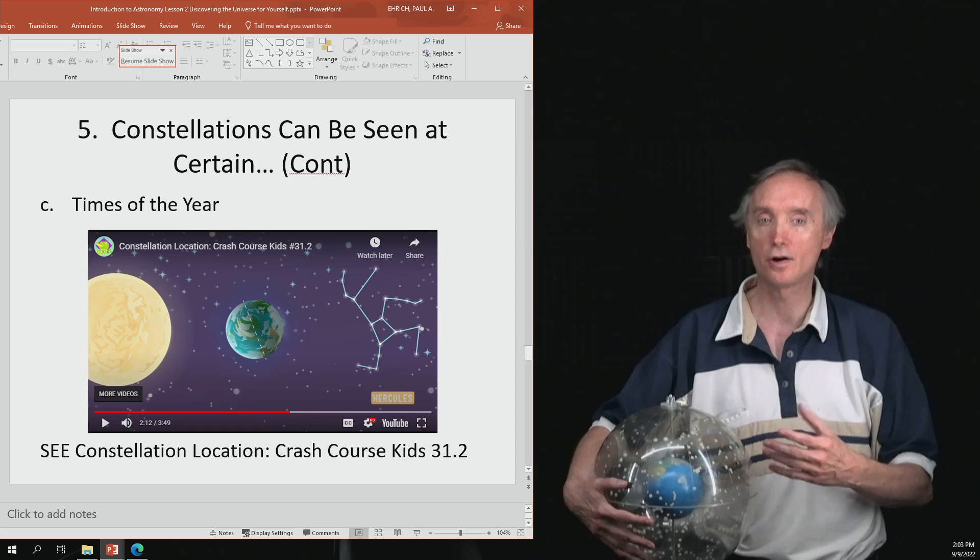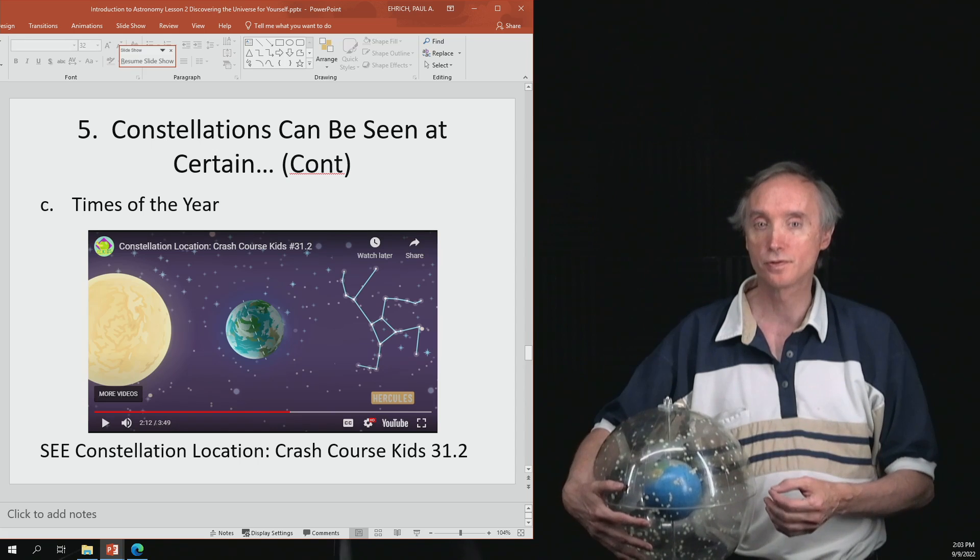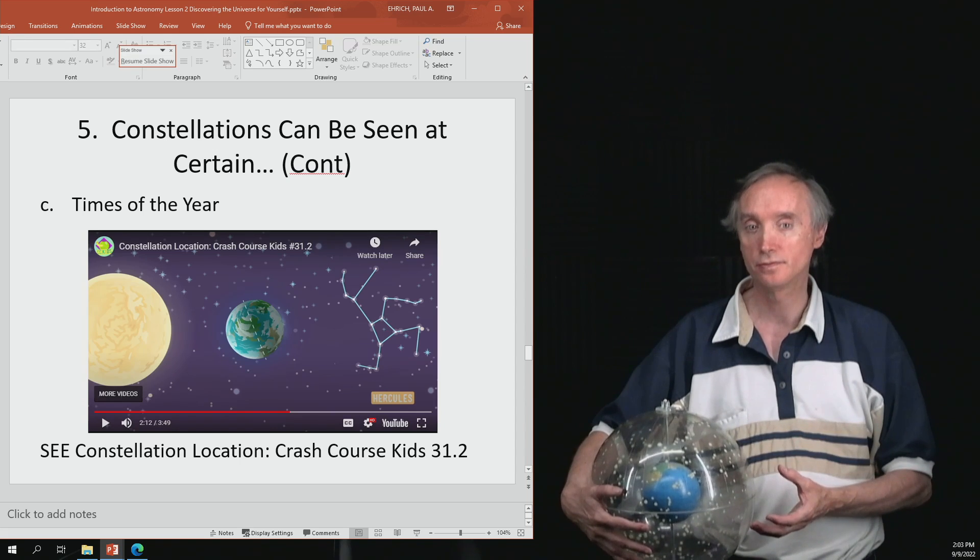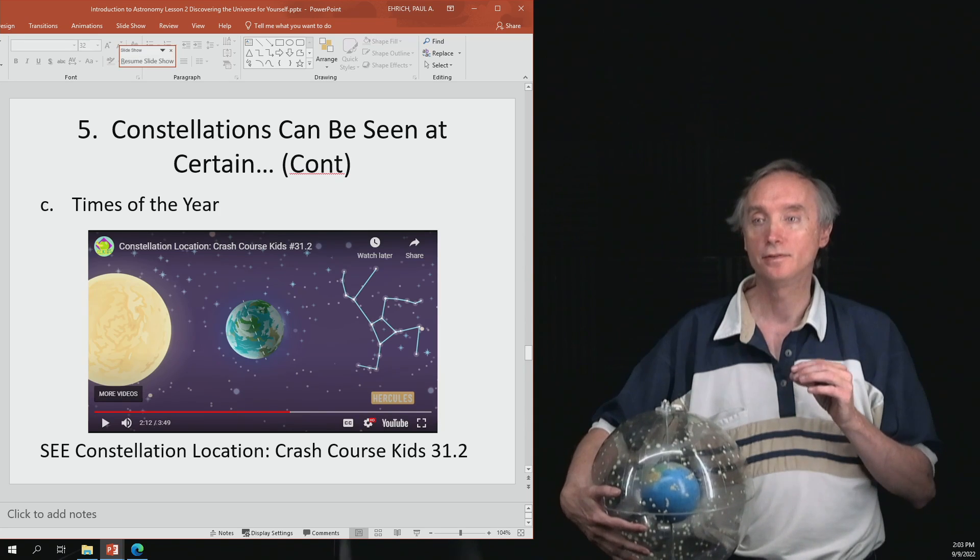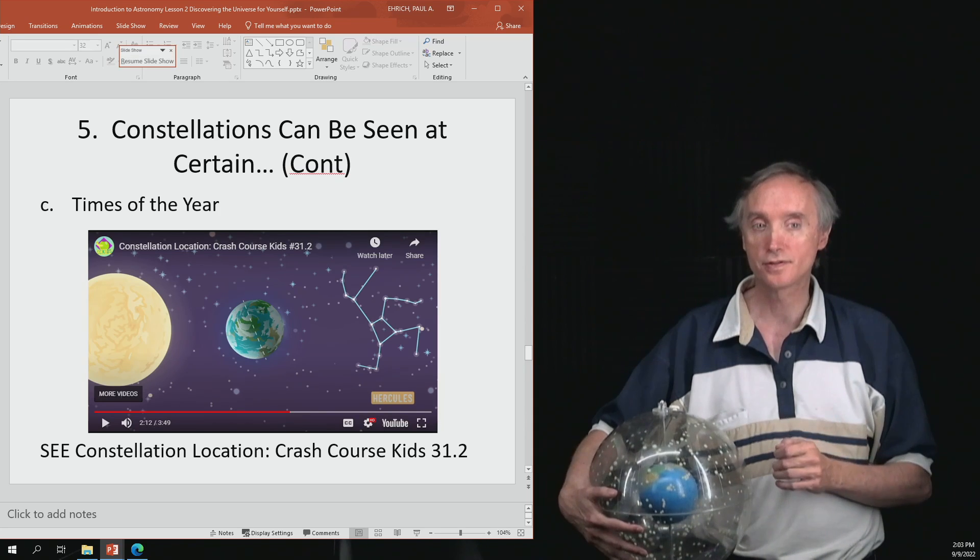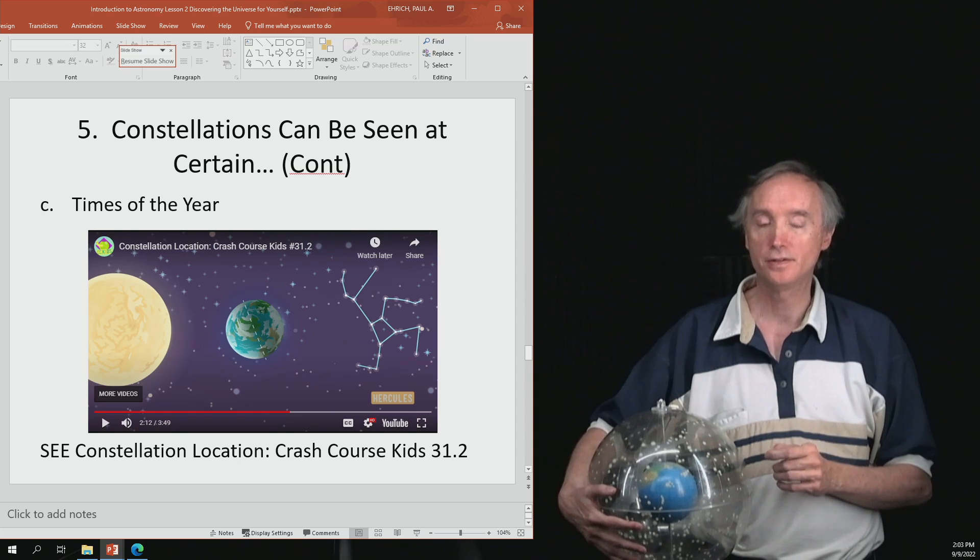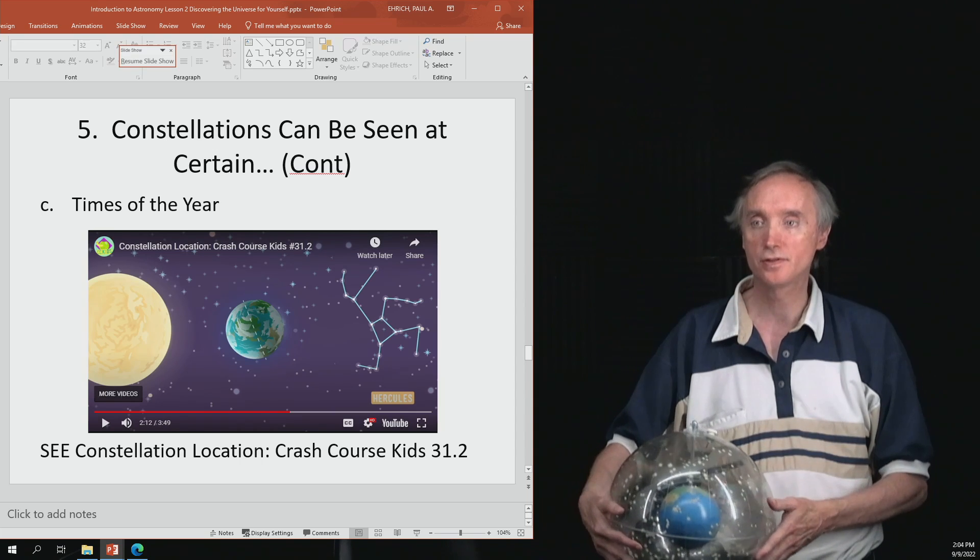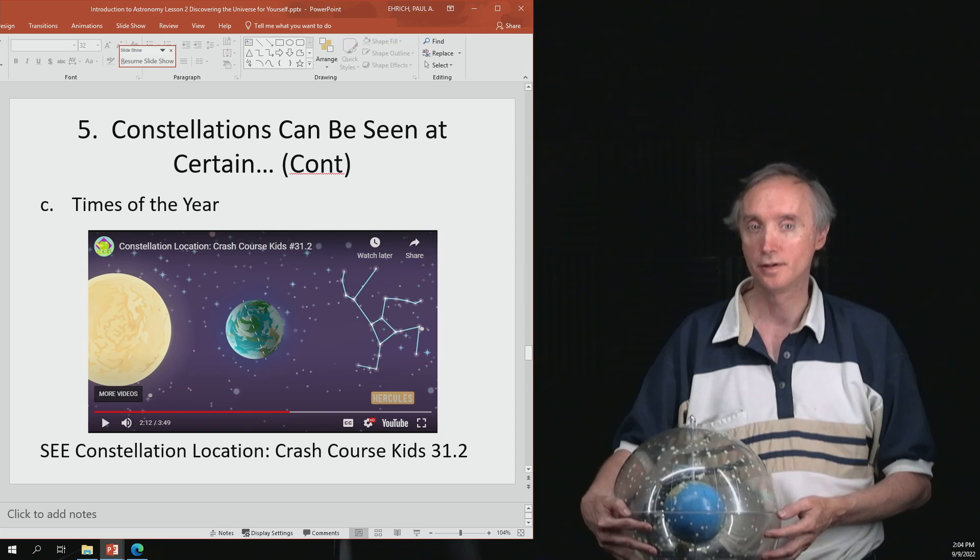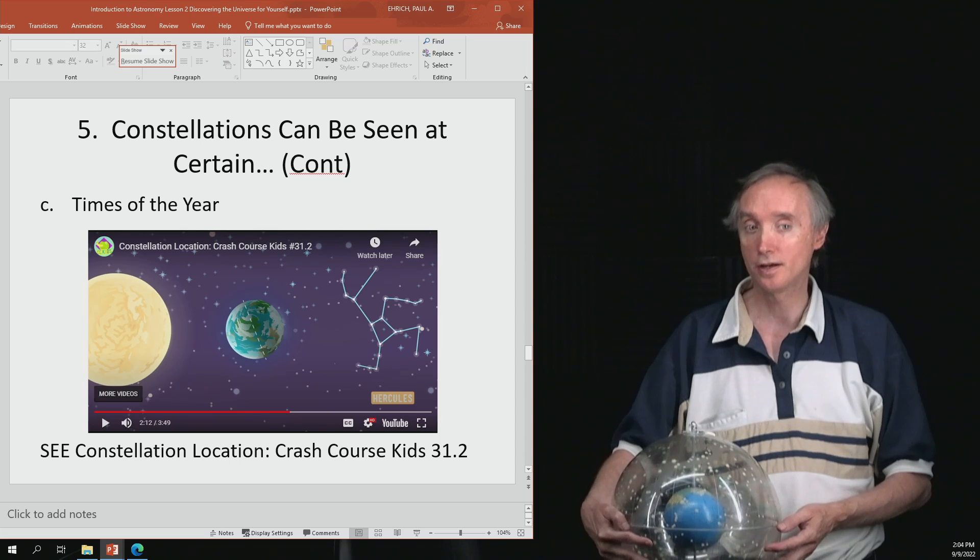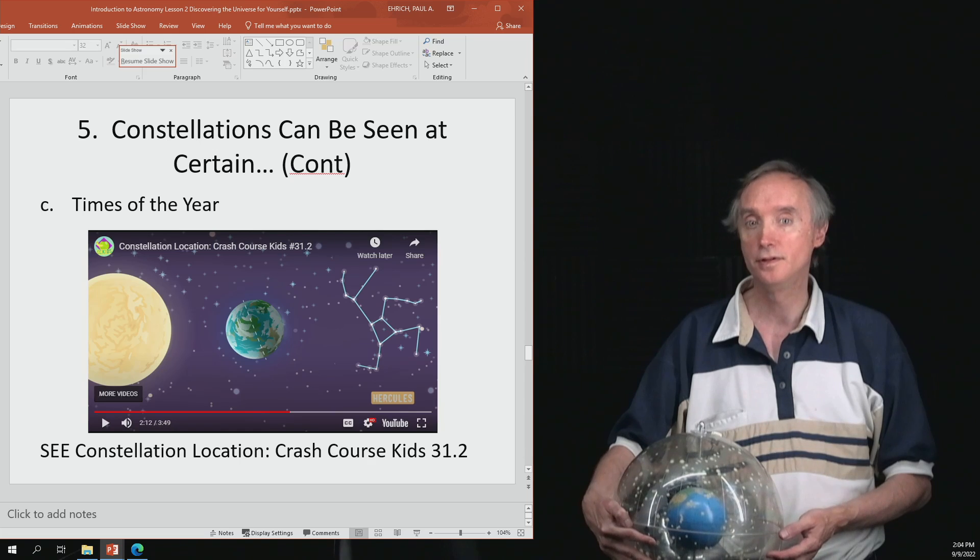So let's talk about Orion. Orion was the one that had the three stars. It had the damn dirty apes. Remember that? So it's a winter constellation. That means that you can very easily see Orion during the wintertime, but during the summertime, you don't see it. Why? It's because the sun is in the way.